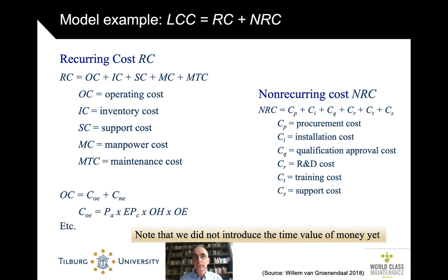So there are non-recurring and recurring costs. The non-recurring costs are the costs you make initially: the procurement, the installation, the qualification, some R&D, some training — costs you make one time. Then there are the recurring costs, the costs you make every period, every year or so: the operating costs, the inventory, the support costs, the manpower. The non-recurring costs are what we typically call CAPEX — capital expenditures. The recurring costs are what we typically call OPEX.